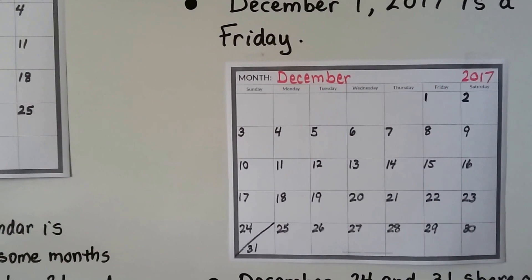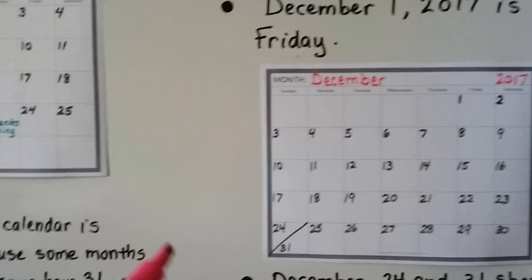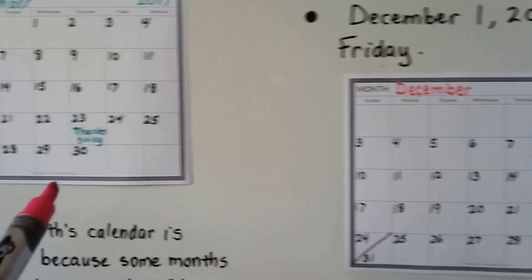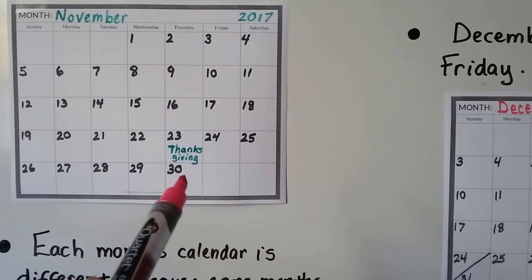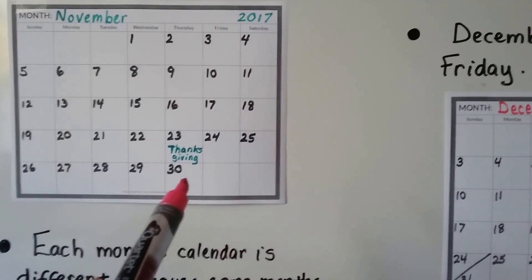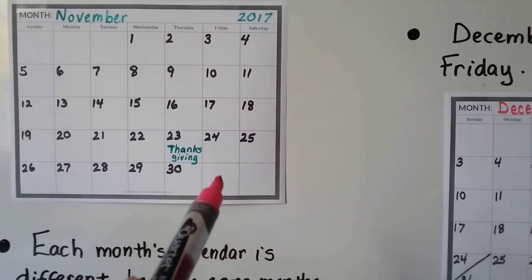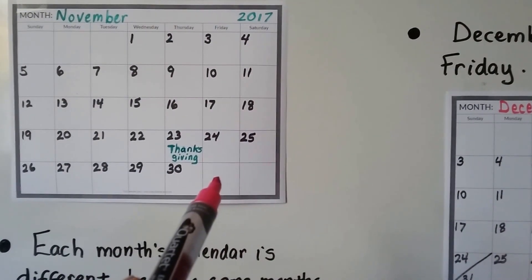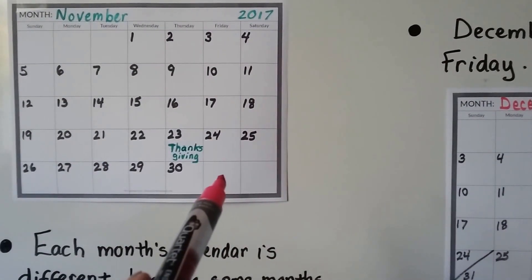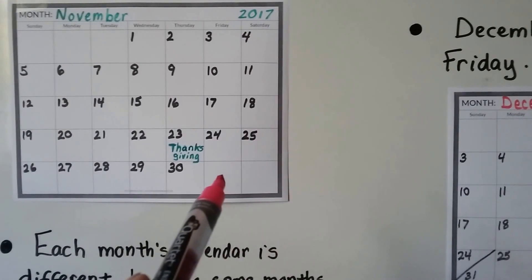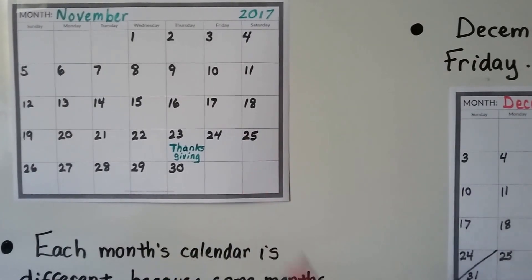Now, why is that? If you look at the last day of November, that falls on a Thursday. So the very next day is going to be a Friday, and that would be in December's calendar — December 1st, December 2nd.